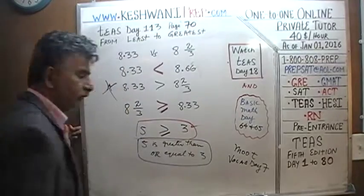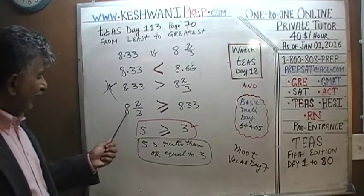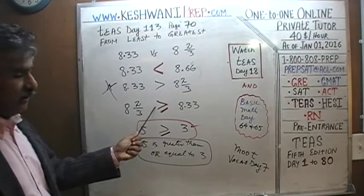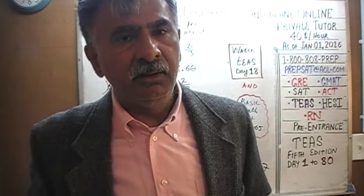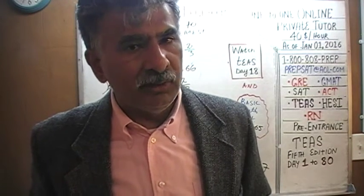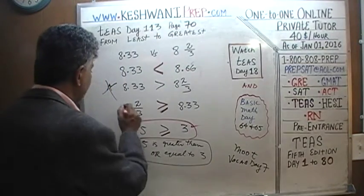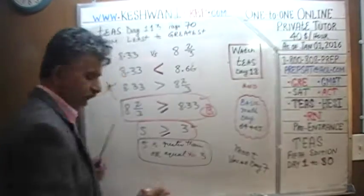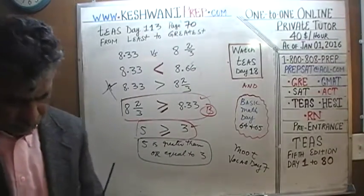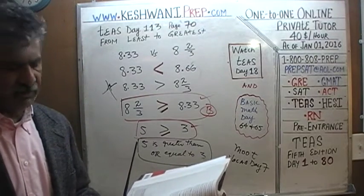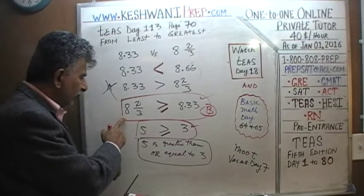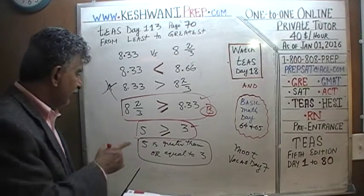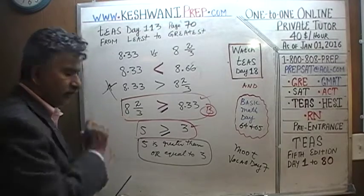Therefore, so is this statement: 8 and 2 thirds, which is 8.66, is indeed greater than or equal to 8.33. Even though it is not equal to — 8 and 2 thirds will never be equal to 8.33 because 8 and 2 thirds is far greater — to say that 8 and 2 thirds is greater than or equal to 8.33 is perfectly okay. The answer is B. In C they say the two are exactly equal, which is not the case. In D they say 8 and 2 thirds is less than 8.33 — obviously not. The answer is B.